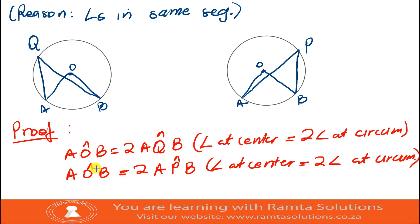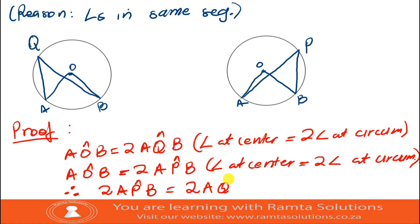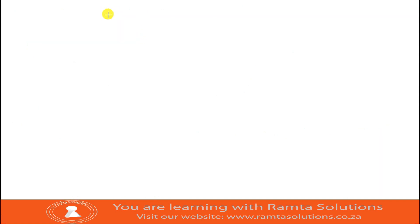Therefore, since angle AOB equals two times angle AQB, and angle AOB also equals two times angle APB, we can say two times angle APB equals two times angle AQB. Dividing by two throughout — basic algebra — we get that angle APB is equal to angle AQB.